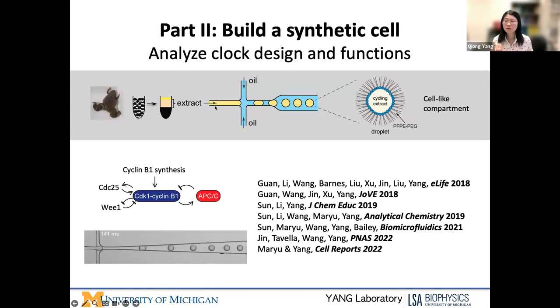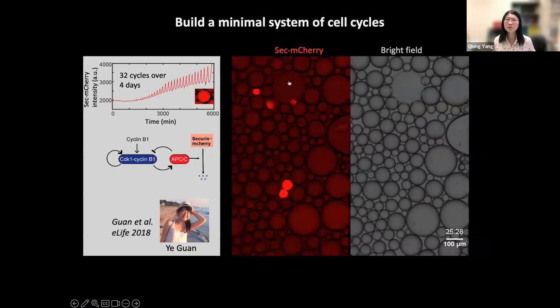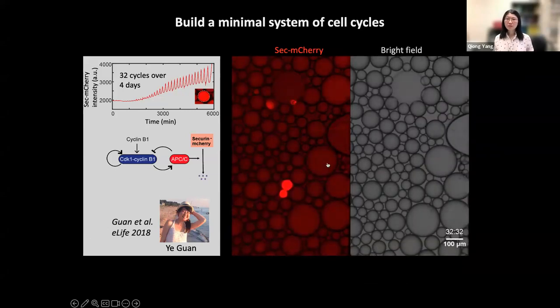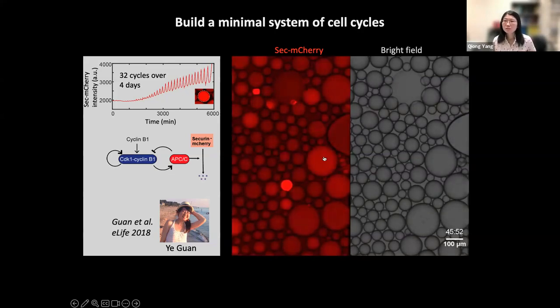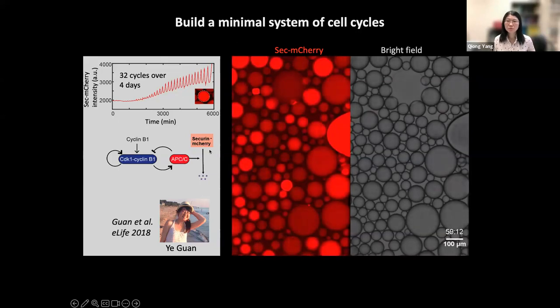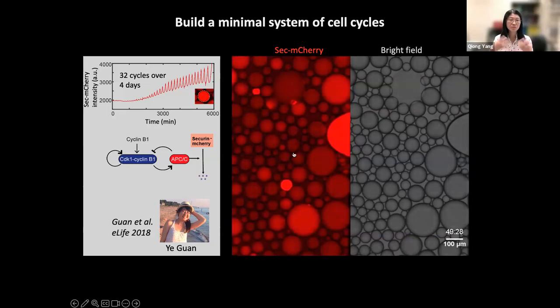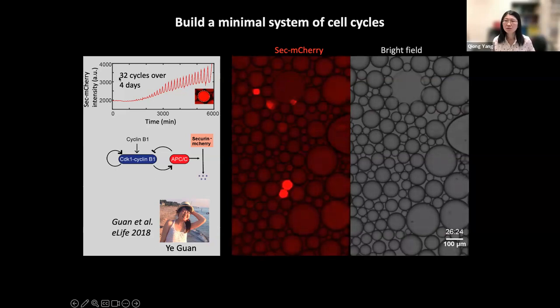We take only the cytosolic portion and inject that into a microfluidic chamber filled with oil. That will create this water in oil emulsion comparable to cell size to mimic cell behavior. We reconstitute the cell cycle circuit in these droplets, and that allows us to do manipulations and quantification of these clocks. The droplets here are the minimum cells, we call it, because these only have cytosol. We have securin, which is an anaphase substrate fused with fluorescence protein as an indicator for these oscillations. Securin mCherry is translated in interphase, so you see it's getting brighter, and then degraded in mitotic phase. Each cell can oscillate about 30 to 40 cycles over multiple days.